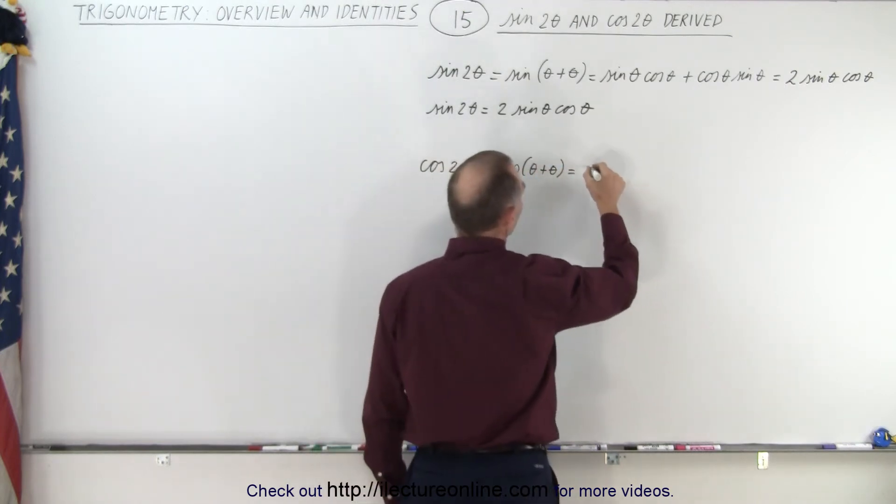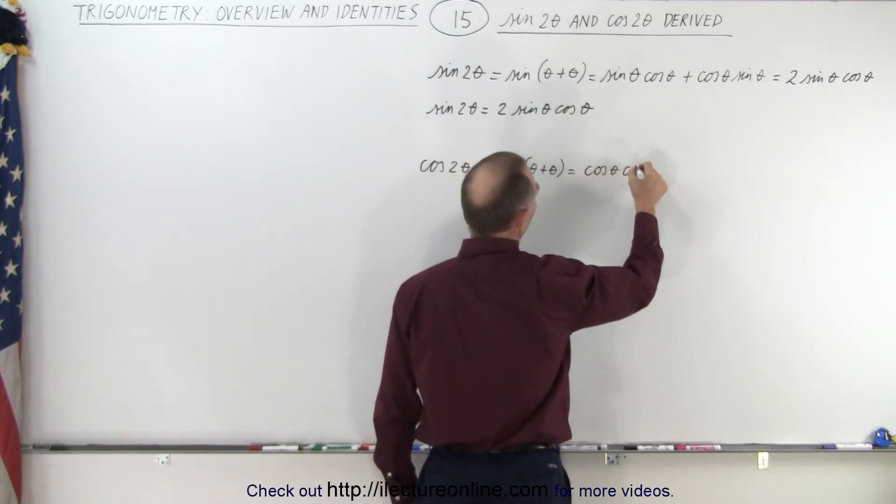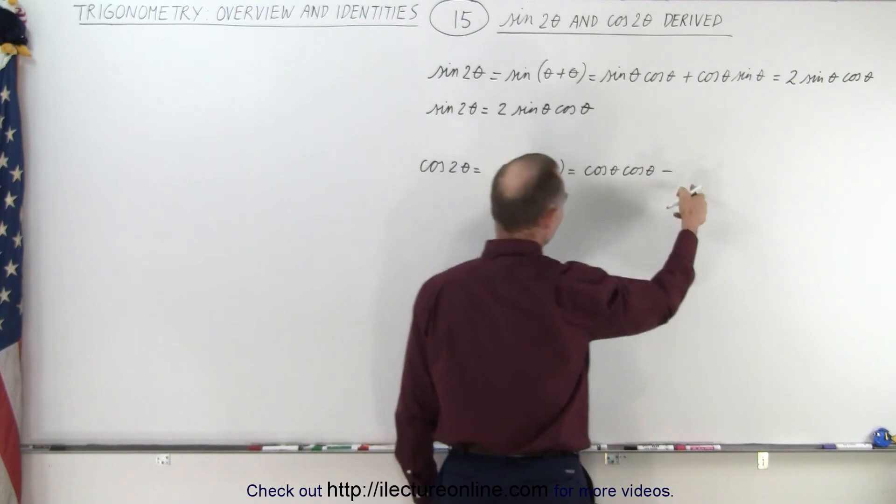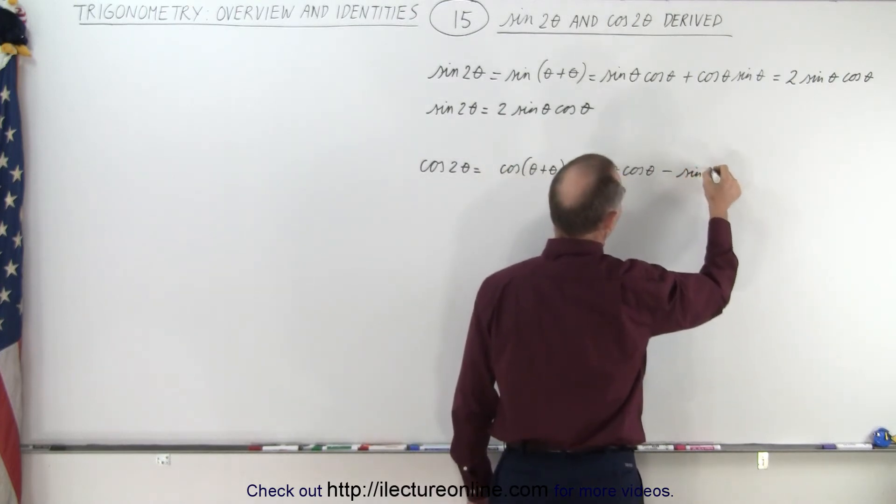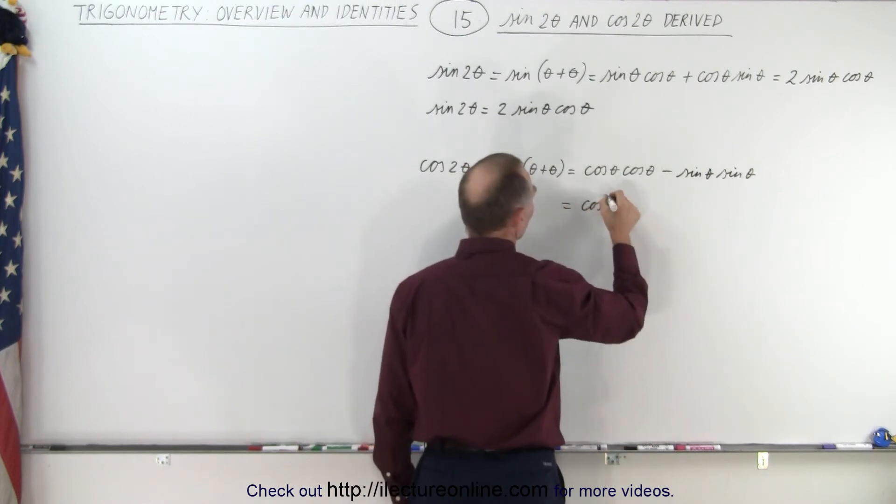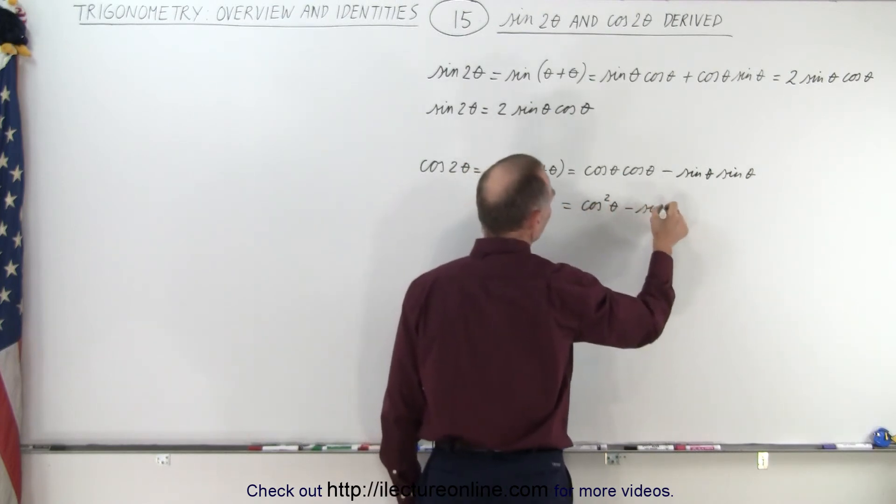This equals cosine of theta times cosine of theta minus, because we have a plus here that becomes a minus, sine of theta times sine of theta. This is equal to cosine squared of theta minus sine squared of theta.